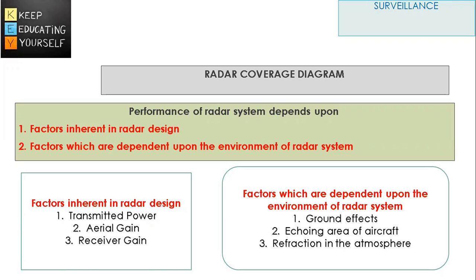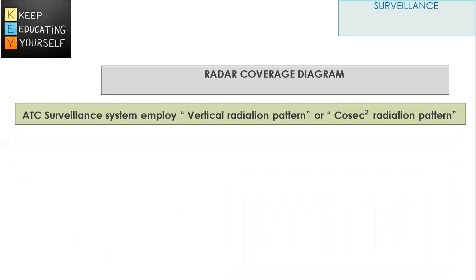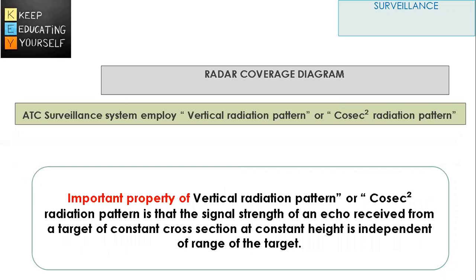Factors of ATS radar systems summarize the anticipated performance of their radar system by way of a vertical coverage diagram. ATS surveillance radar systems employ a vertical radiation pattern so that the coverage diagram covers all aircraft at all ranges up to the same height. This type of vertical radiation pattern is called a cosecant squared radiation pattern. An important property of this pattern is that the signal strength of an echo received from a target of constant cross-section at constant height is independent of the range of the target.